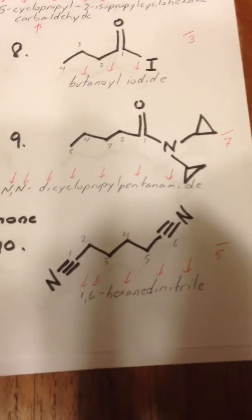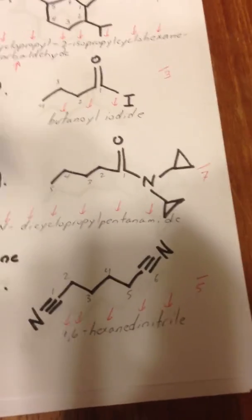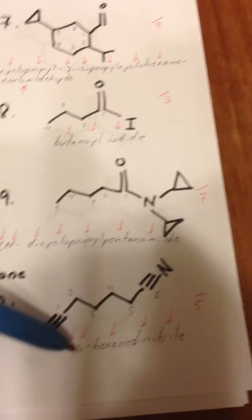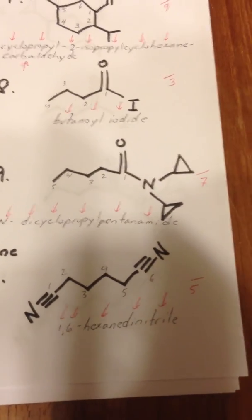The last molecule is a nitrile. There are two nitrile moieties, so we count the longest chain, 1, 2, 3, 4, 5, 6, and we say 1,6-hexanedinitrile.